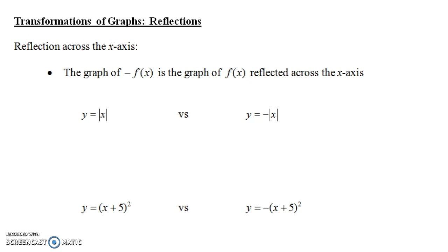Let's begin with reflections across the x-axis. The graph of negative f(x) is the same thing as the graph of f(x), only reflected across the x-axis — in other words, reflected upside down. What is negative f(x)? How does that differ from just f(x)? Well, it's the same thing as f(x), only there's a negative in front of the whole formula.